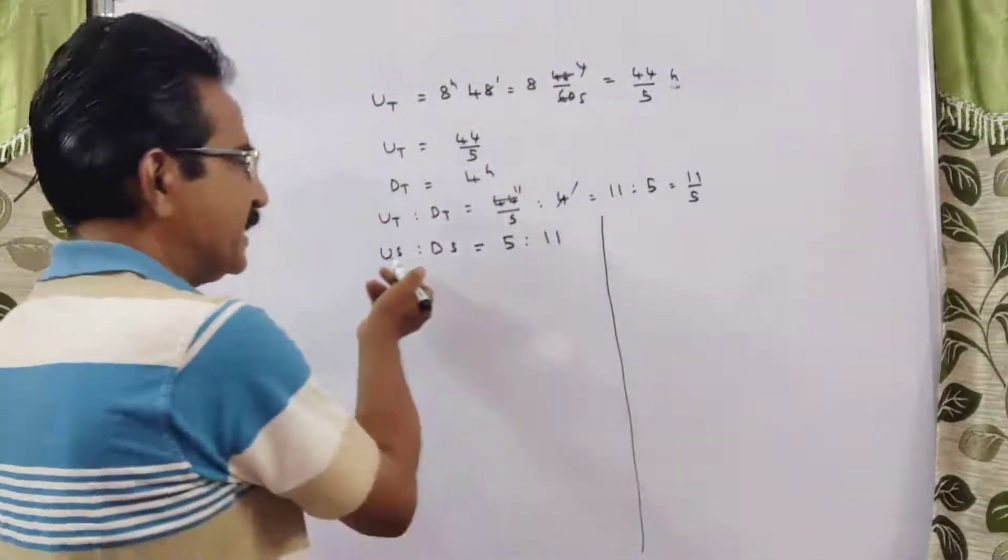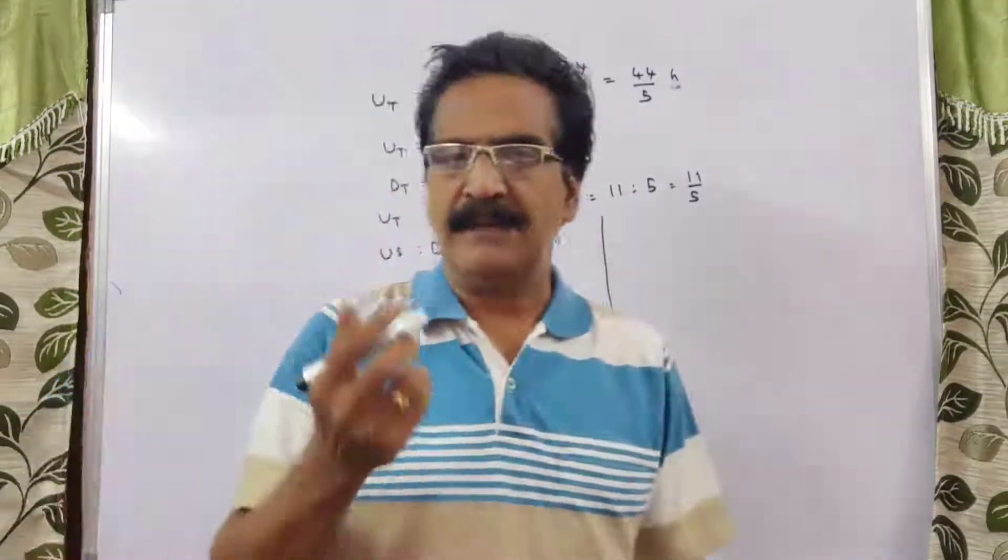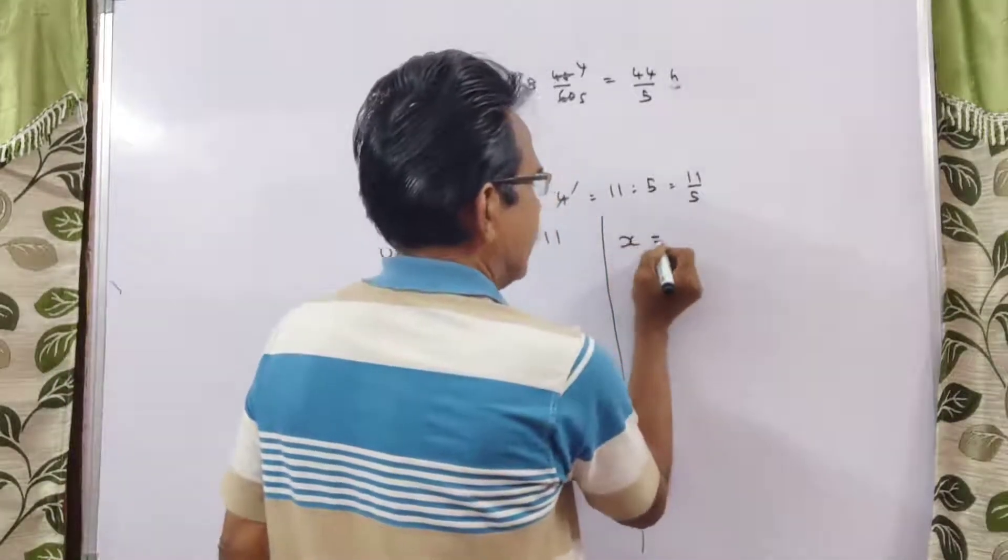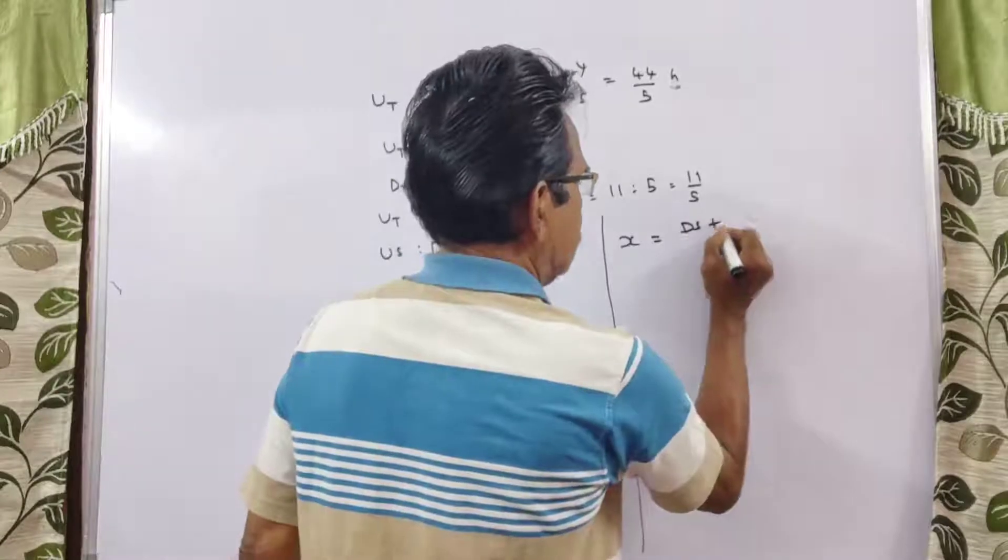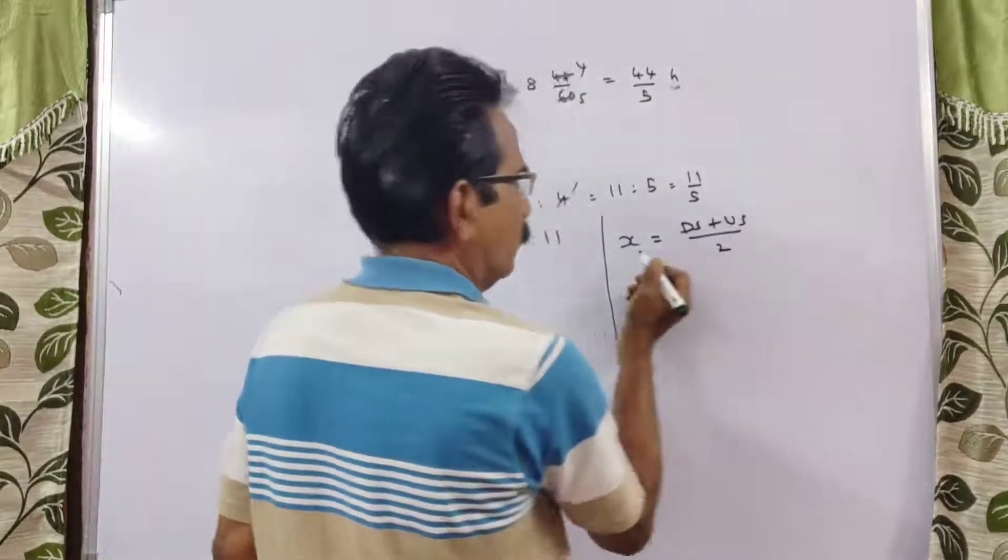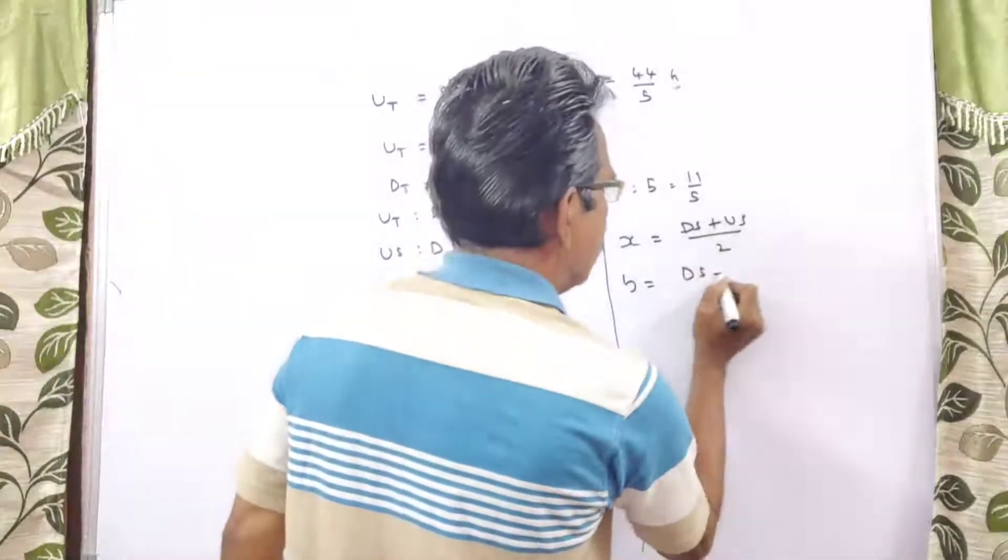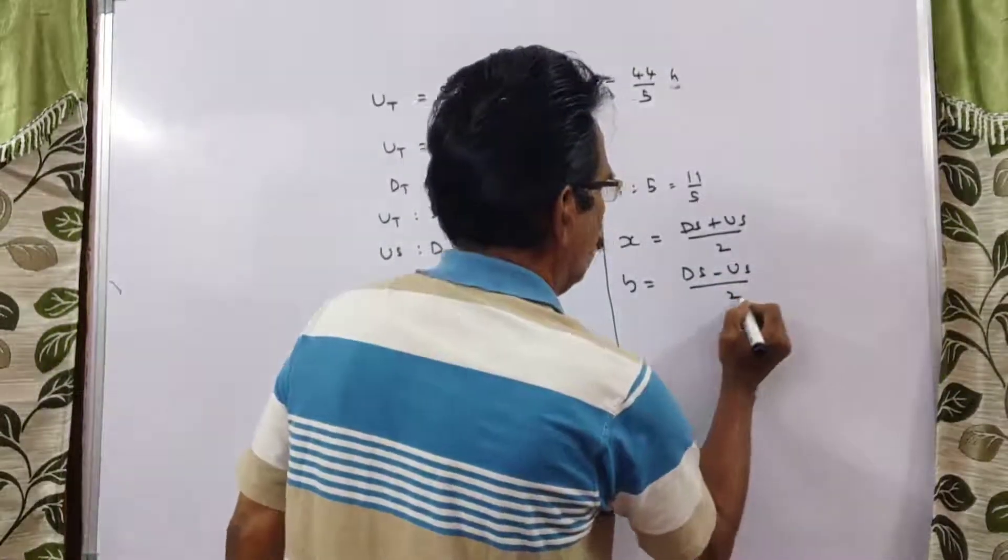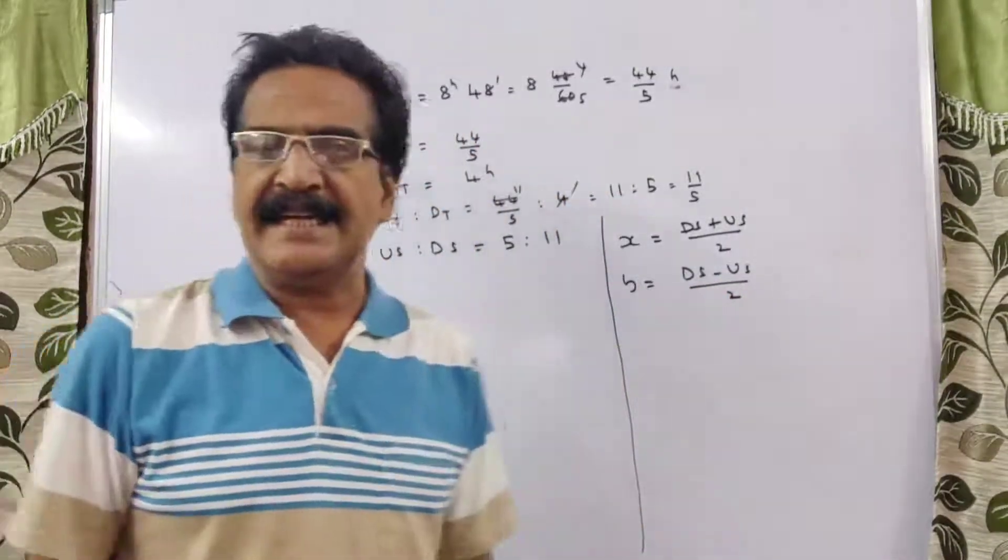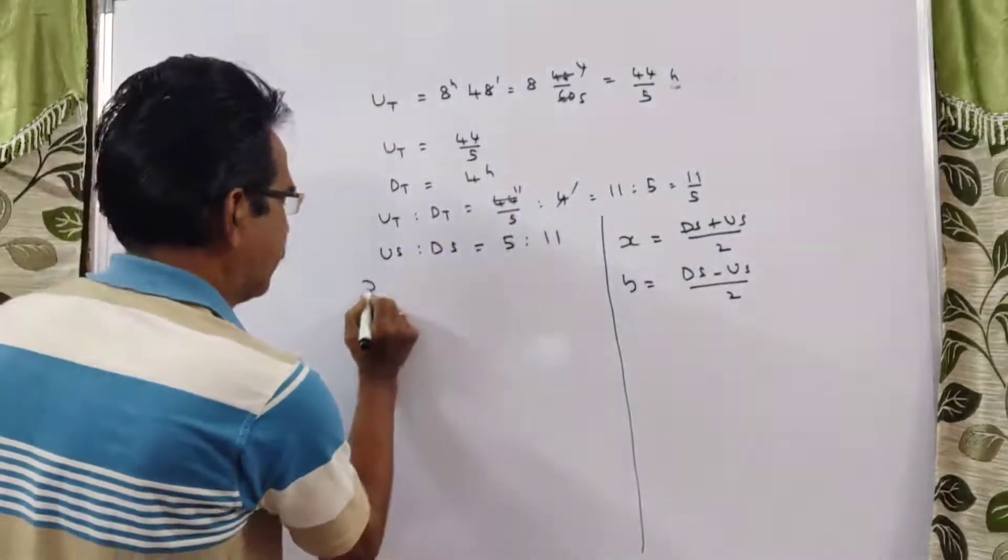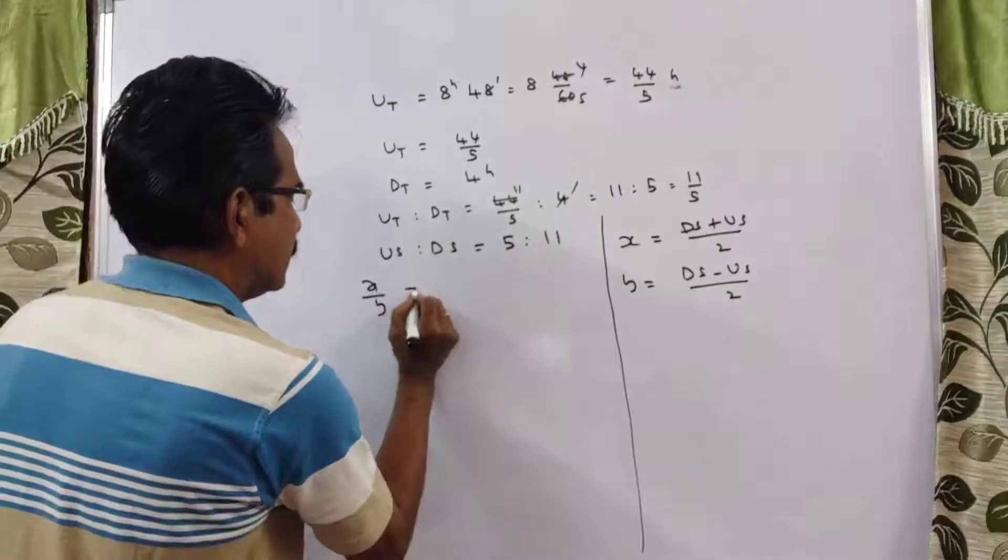When ds and us are known, x is equal to ds plus us by 2, where x is the speed of the boat in still water. Y is equal to ds minus us by 2, which is the rate of the current. Now you have to find x to y.